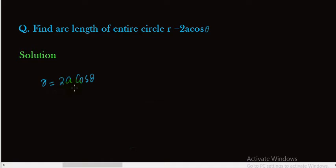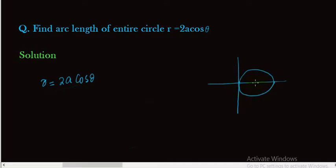The circle passes through the origin, having its center at the point (a, 0) and a radius of a. Now we have to find the arc length of this circle, which is the circumference of the circle. First we need to find the variation of theta.